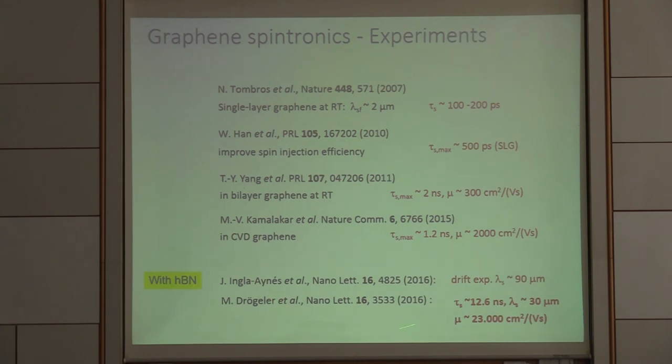It was in the last two years, or one and a half years, where now also HBN started to enter these experiments. This is an experiment from Groningen, where there was now spin diffusion lengths around 19 micrometer. And this is our work from last year, where we actually get now these very high numbers.